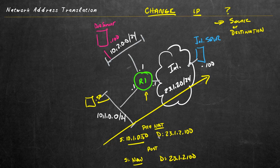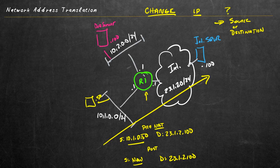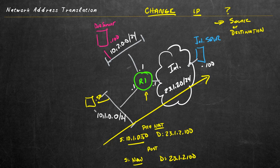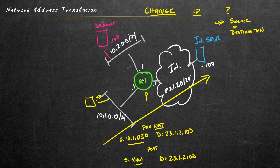Even though it's source NAT, when the server responds back to the new translated address, the router that did the original translation is going to untranslate the packet and forward it back natively to the client. The client doesn't even know — it thinks it went from 10.1.0.50 to the destination address, and the response came back. The router was doing the initial swap of the source address and then untranslating it for the response.